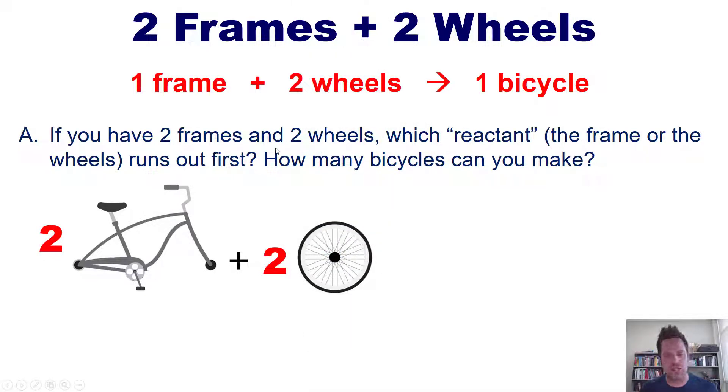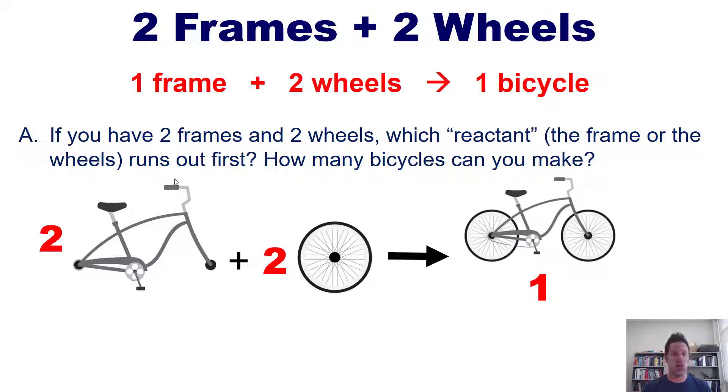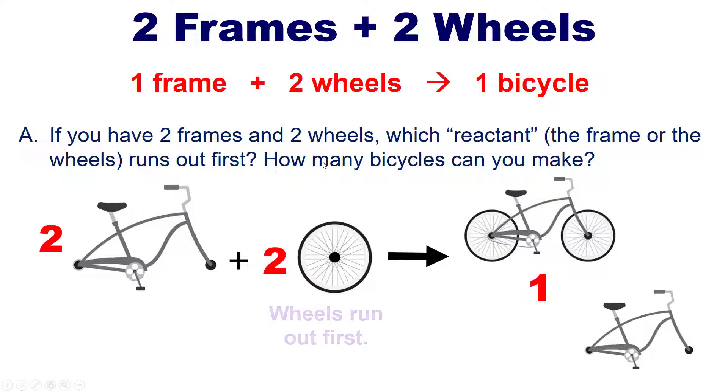Well, as you can well imagine, each bicycle requires two wheels and all you have is two wheels. So you take two wheels and you fasten them to one of your frames. When you're done doing that, you make one total bicycle. That's all you get. You also end up with one leftover frame. Can you use that frame to make bicycles? No, because you don't have any more wheels. All you have is two wheels. So the wheels in this case run out first and the total number of bicycles that you make is just one and you have one leftover frame.